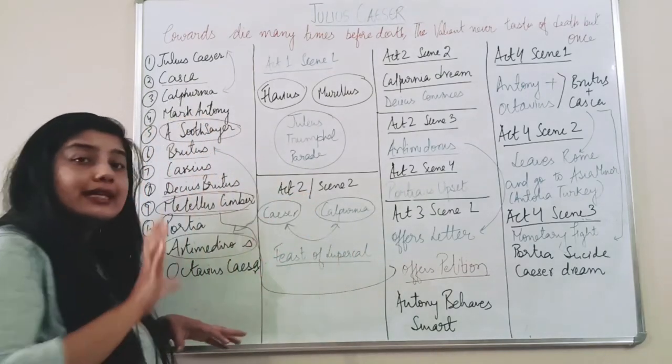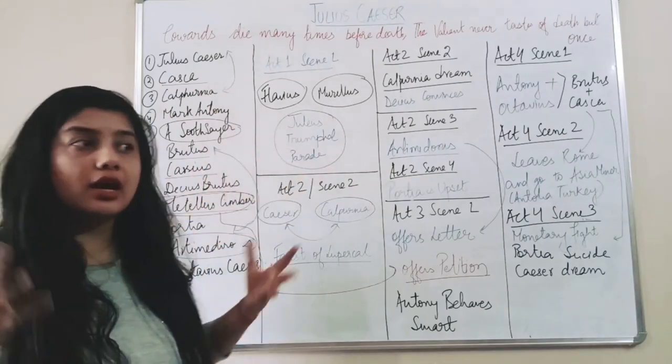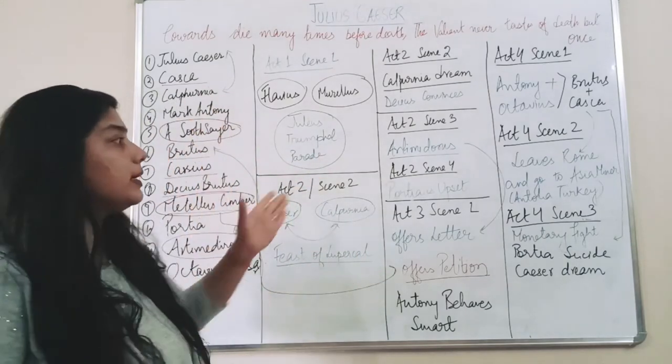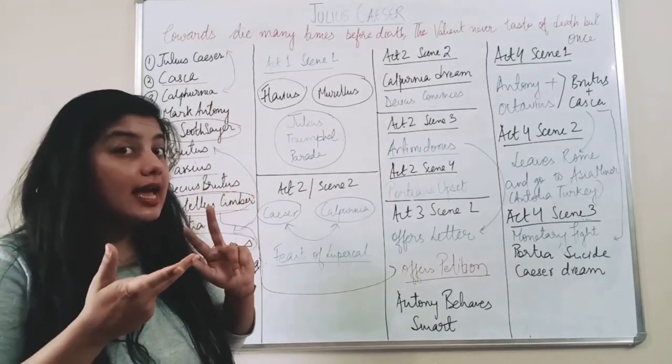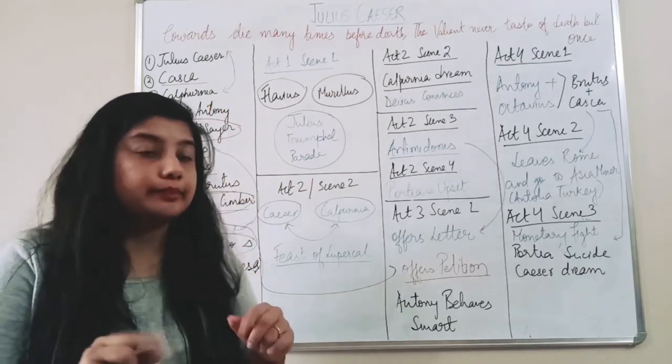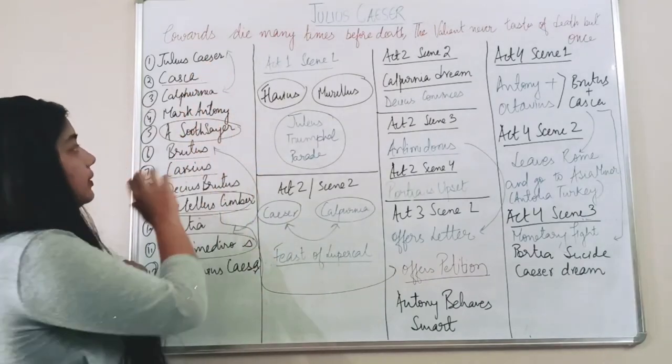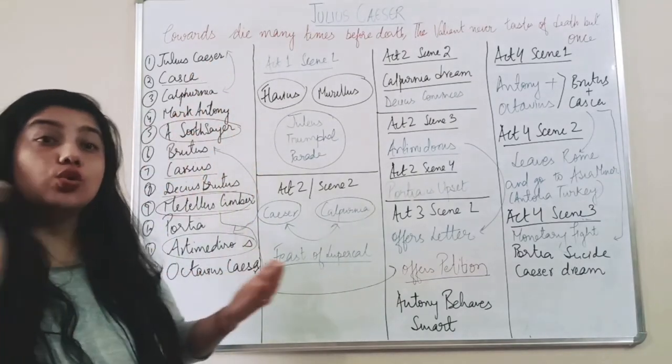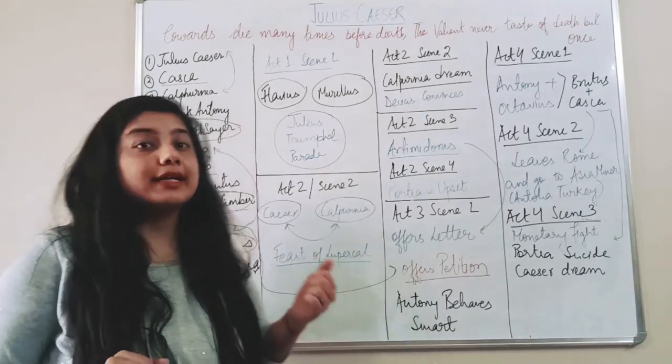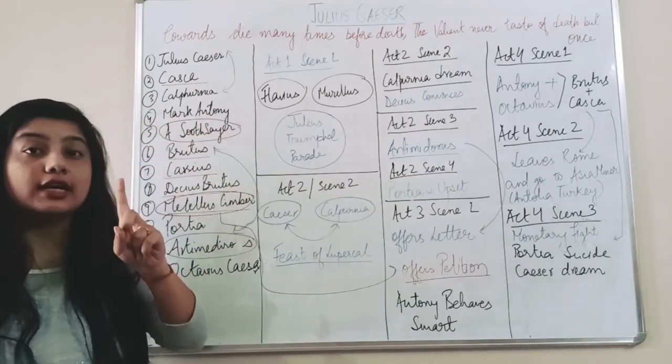Now Caesar is dead. The crowd is there, crowd is confused. Why did these four people kill Julius? So now these four conspirators, they had to plan something. Now children, very important, these four people are in opposition.